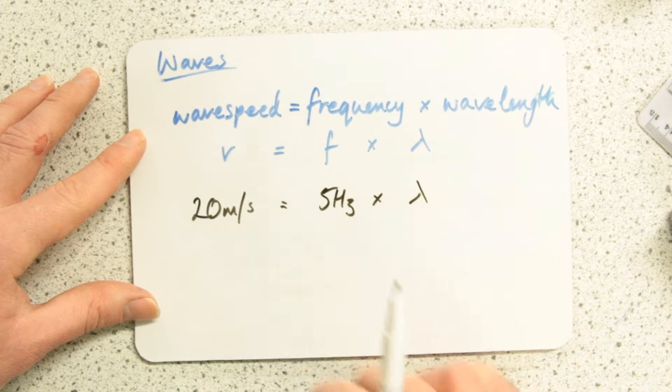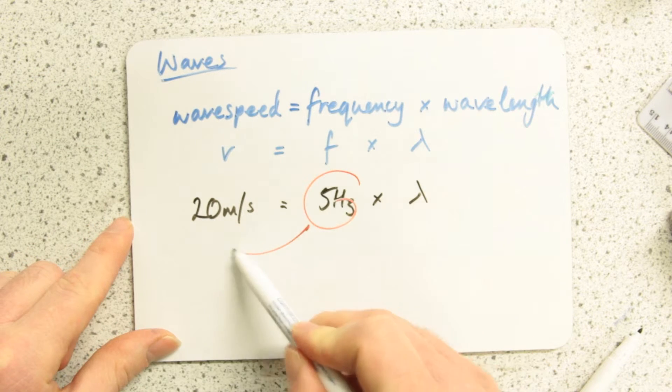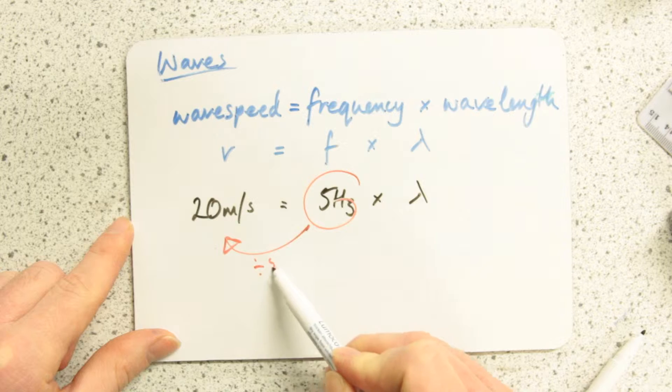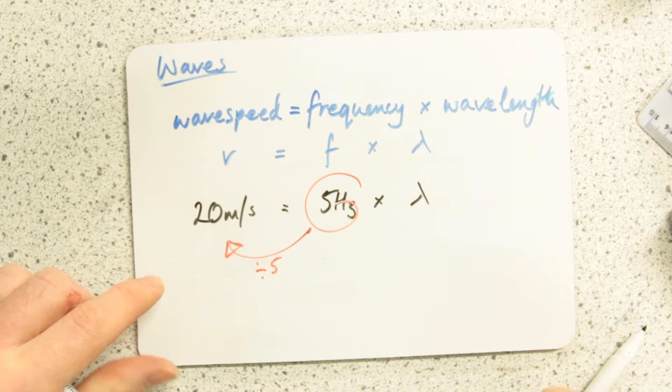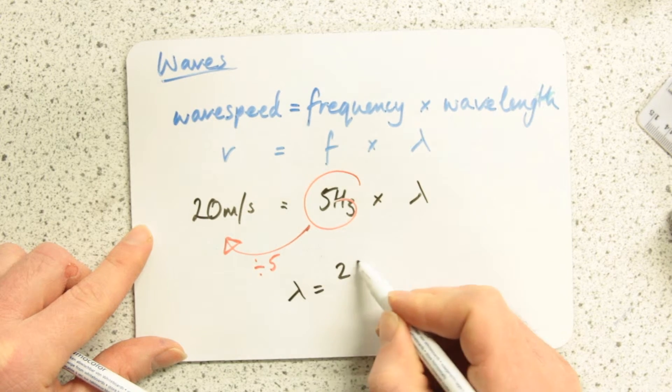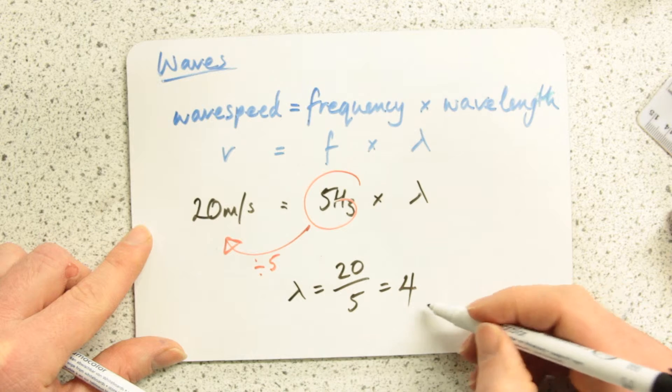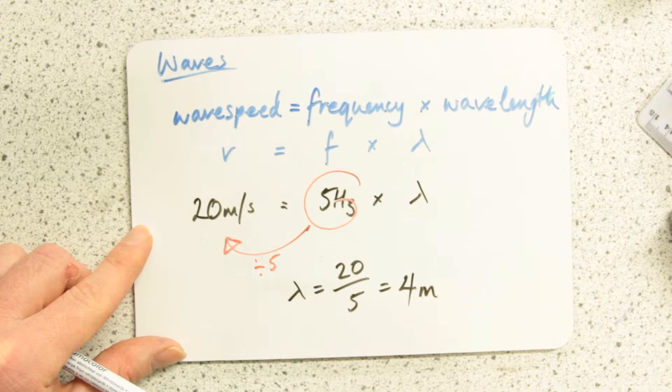Let's just do a quick bit of rearranging. I've got times by 5 on this side, so I can do divide by 5 over here. That leaves me with wavelength is 20 divided by 5, so 4. Those waves were 4 metres long.